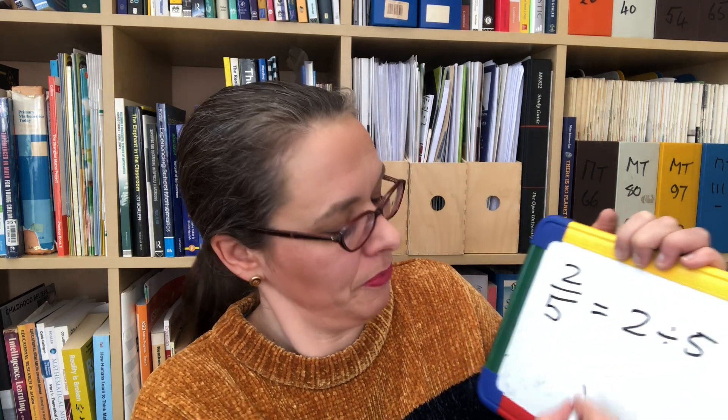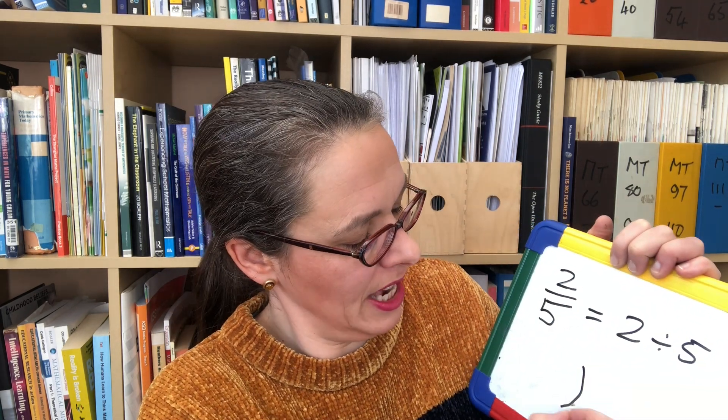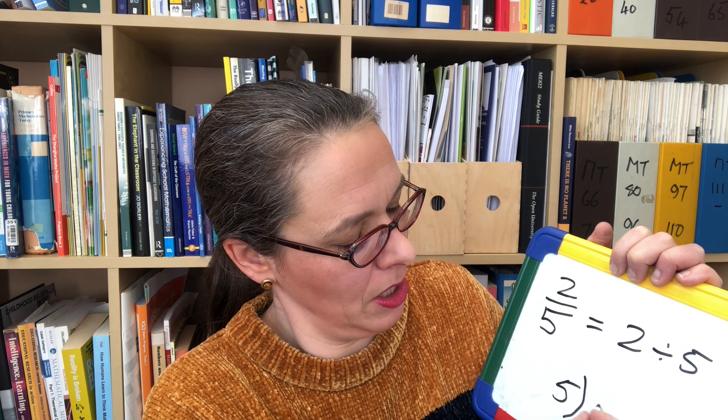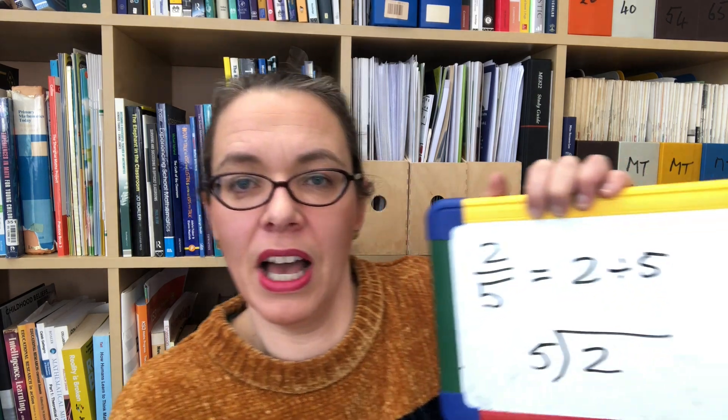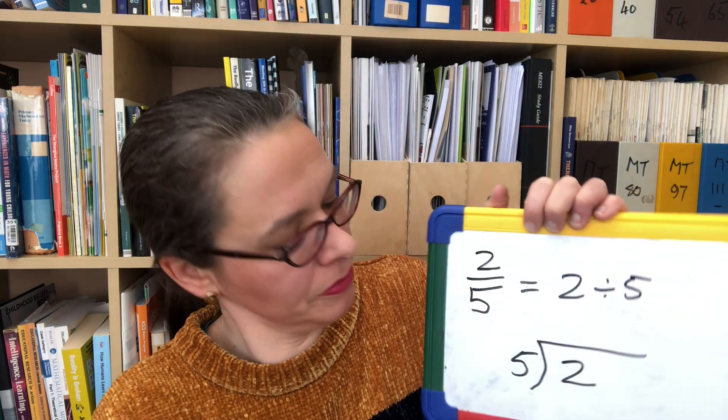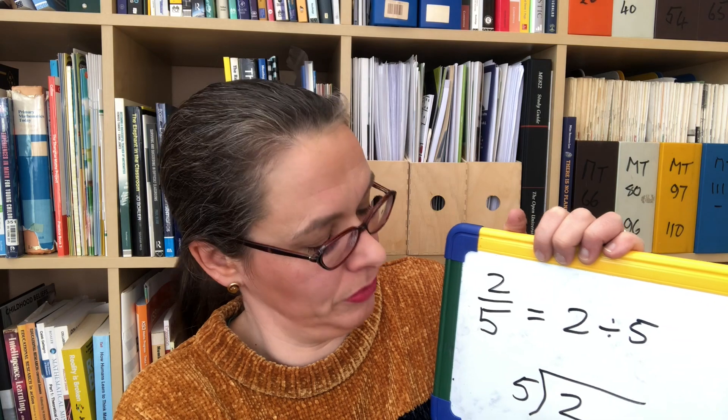Now we can use that to convert fractions into decimals, which is another Year 6 teaching point. If we start with the fraction two fifths, we know that's equal to two divided by five — they are the same thing. So if we set up the calculation of two divided by five...